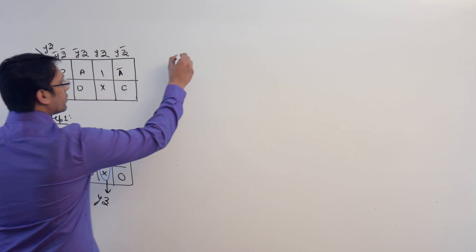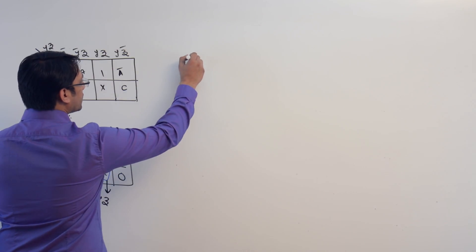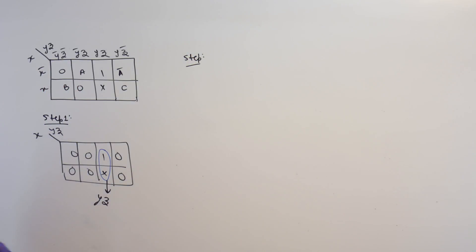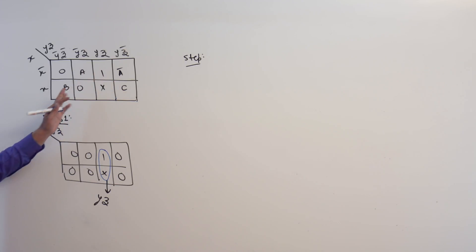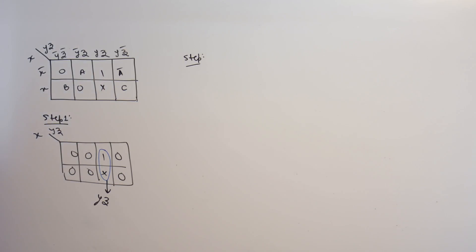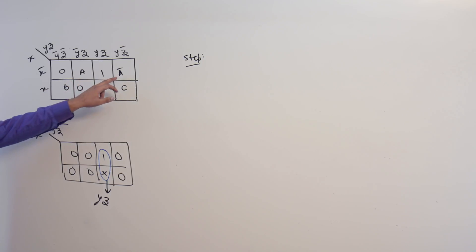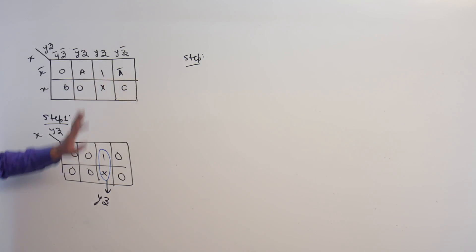Then we take step two. Step two is: take one variable into the kmap, any one variable. For example, initially we start with a, then we do for a complement, then we will do for b, and then for c. Take a variable, keep it as one, keep all the other variables as zero, and keep the original ones as don't care.